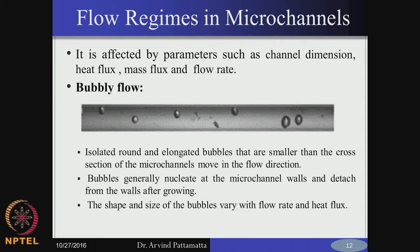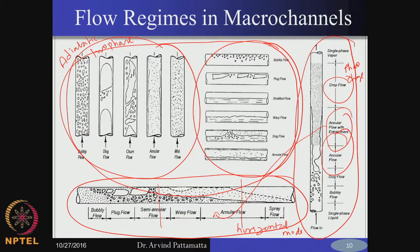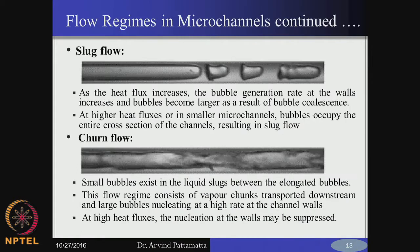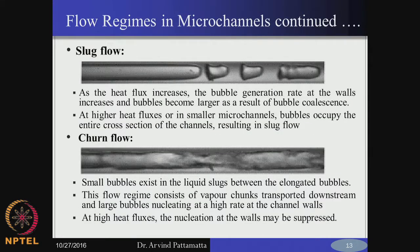The bubbly flow regime in microchannels is quite different from macrochannels. In the macro channel case you have a cluster of bubbles at a given cross-sectional area, whereas in micro tubes you usually have not more than one bubble at a time, and this one will stretch and elongate into the slug or Taylor bubble flow.